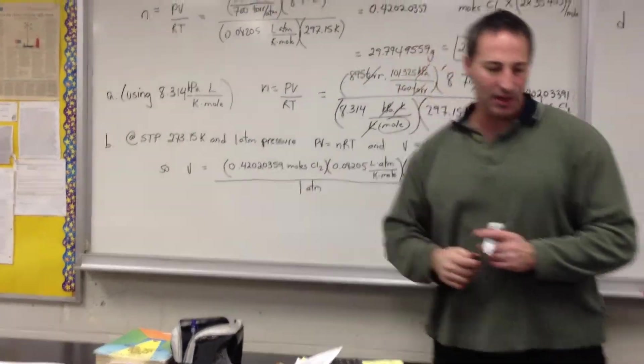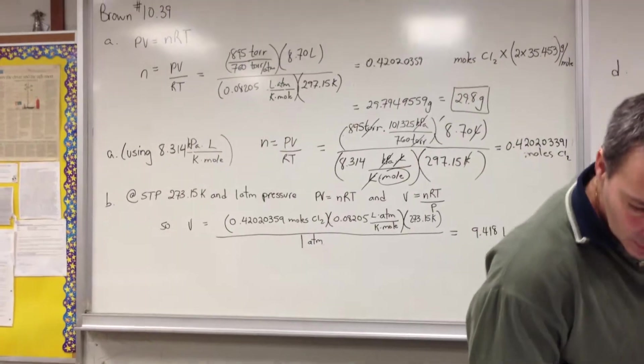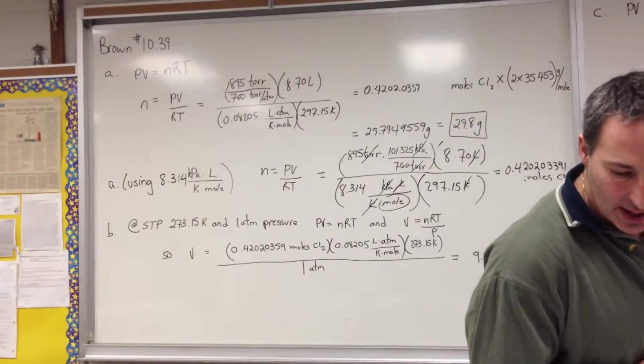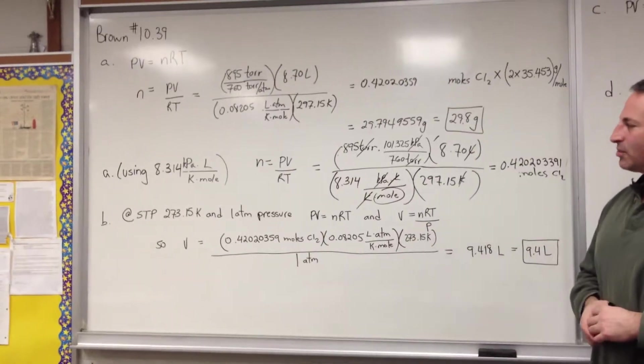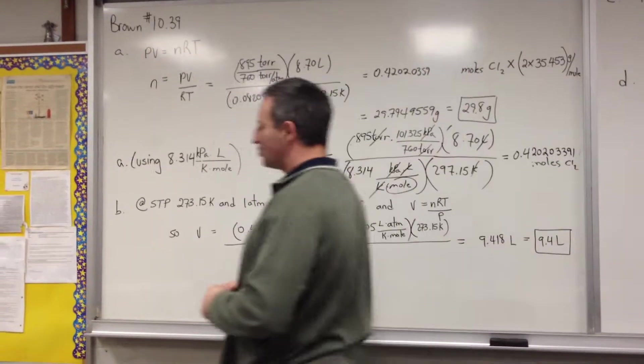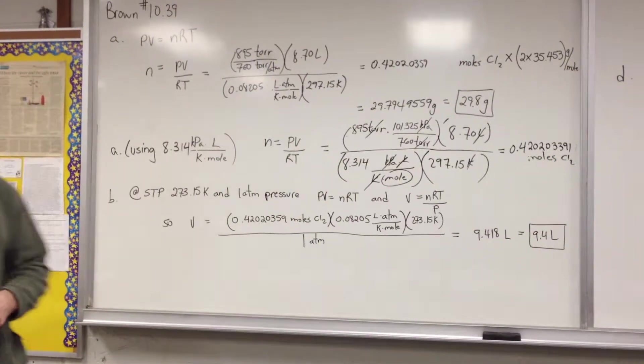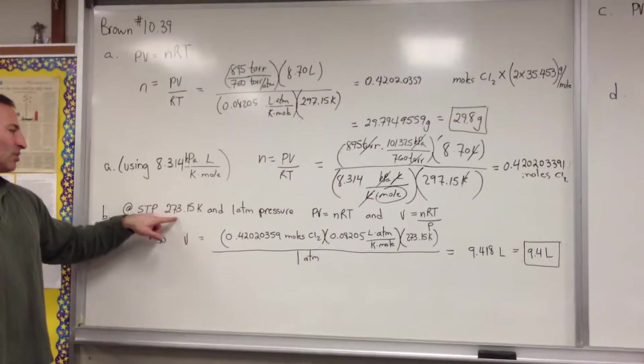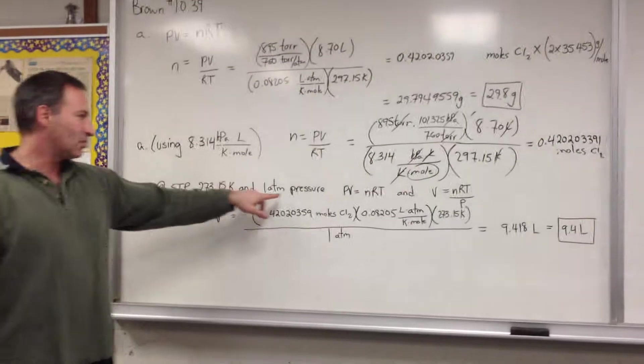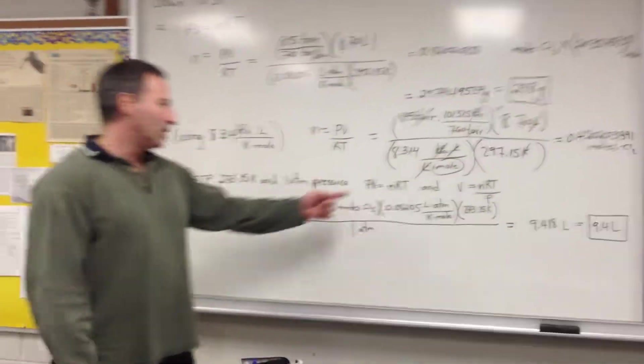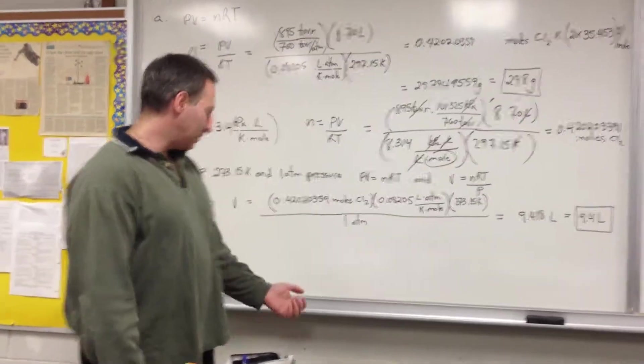In the second part of the question, part B, it asks, what volume will the chlorine gas occupy at STP? STP means standard temperature and pressure. You should memorize what that means. It comes up often. STP means 273.15 Kelvin, also equal to 0 degrees Celsius, and 1 atmosphere pressure. We have the ideal gas equation, PV equals nRT, and we're going to solve for V.